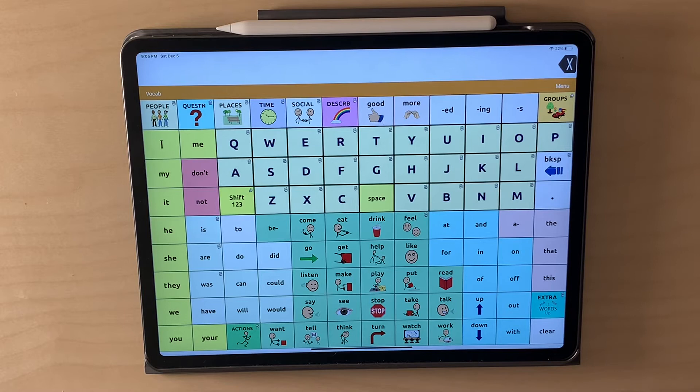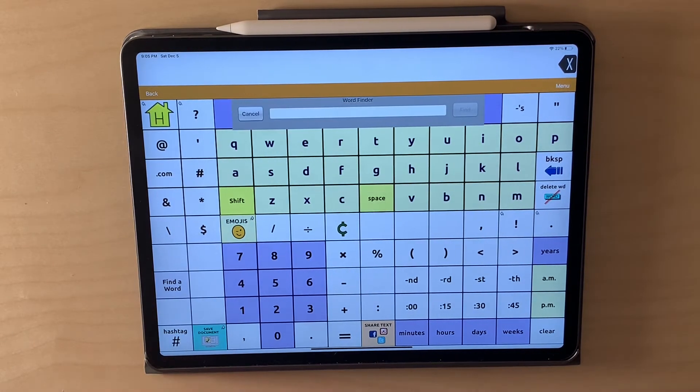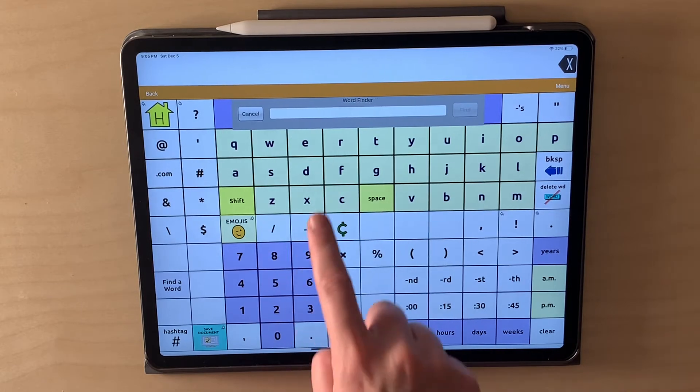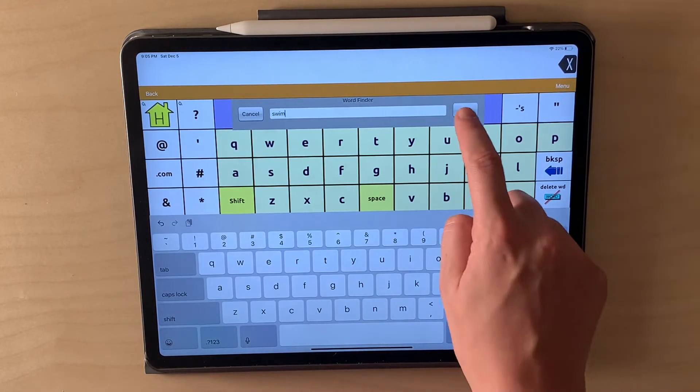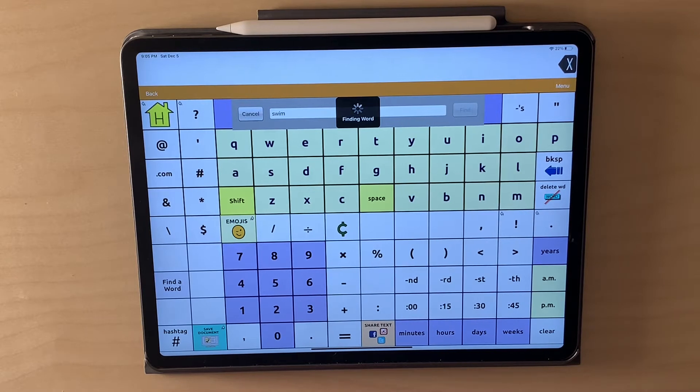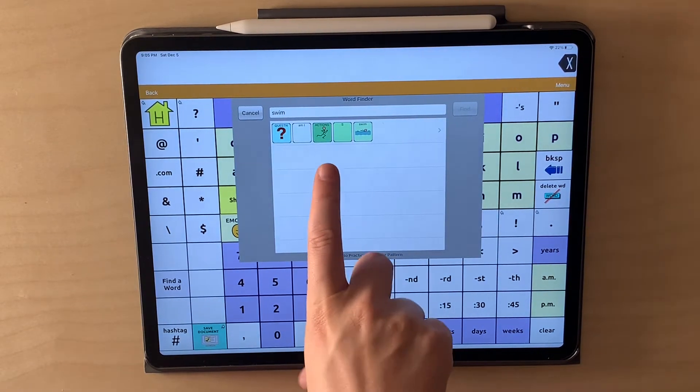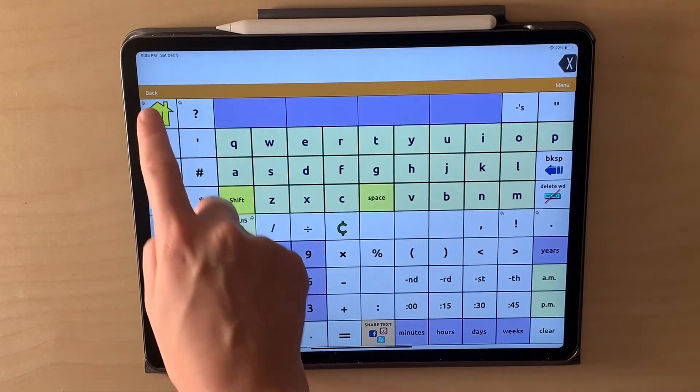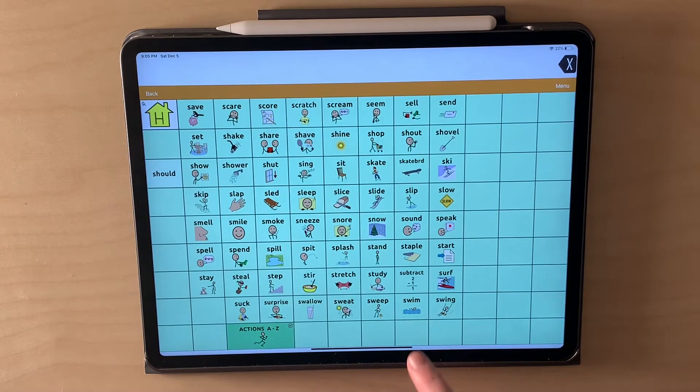The more you use it the easier it'll become. That's always the case with most things. If you can't find words you can use this find a word function. So if I didn't know where swim was I could find it. And then it'll tell me how to get there. So I know it's going to be through actions S and swim.